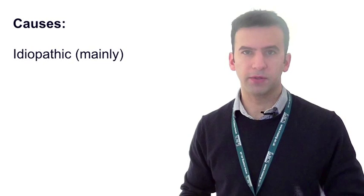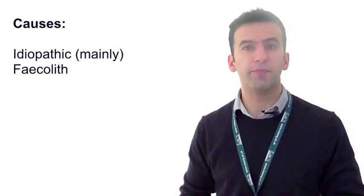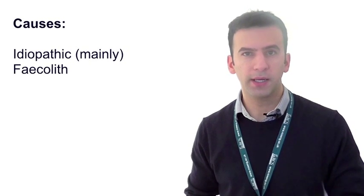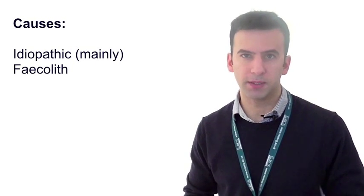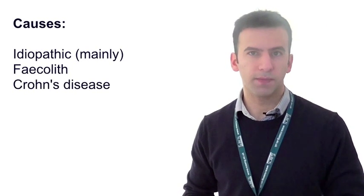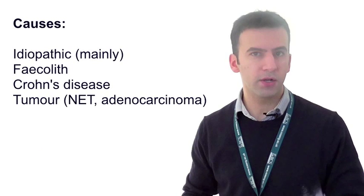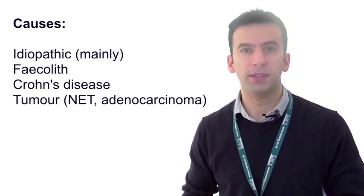Why does the appendix sometimes become inflamed? In most cases no cause is found, but occasional causes include a faecolith — a stone made of faecal matter that can obstruct the appendiceal lumen, leading to appendiceal dilatation and vascular compromise. Another important cause is Crohn's disease, also tumour, for example carcinoid or neuroendocrine tumour of the appendix, or adenocarcinoma of the cecum.